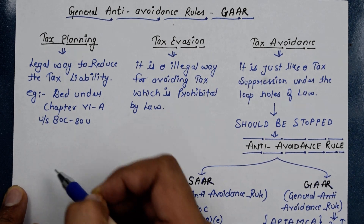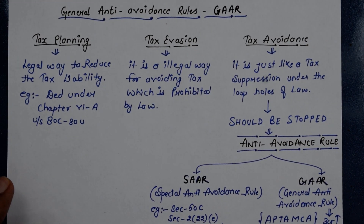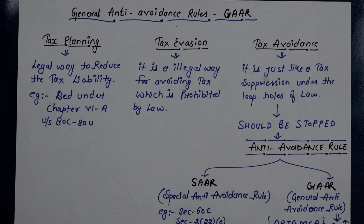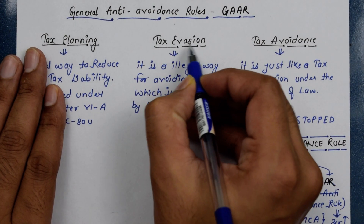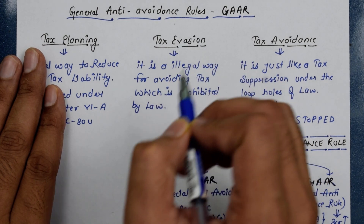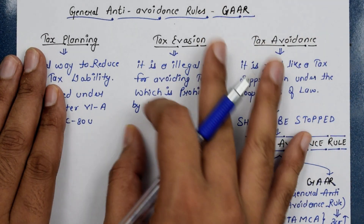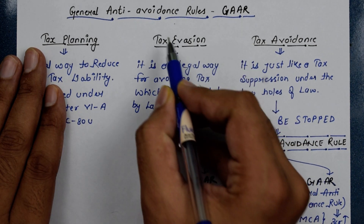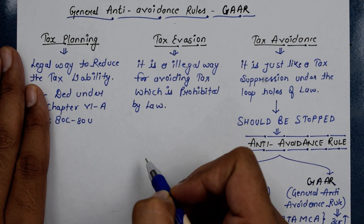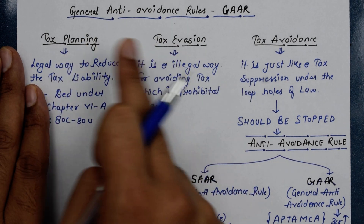The second concept is tax evasion. Tax evasion means illegally hiding your income or not paying the tax you owe. The law prohibits this — it is forbidden by law. Tax evasion is illegal and you are not allowed to avoid tax through this method.